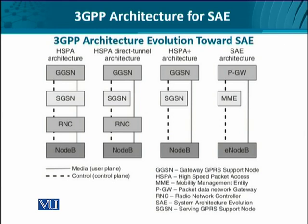Moving from HSPA to the direct tunnel architecture — the second block diagram from the left — we see the concept of direct tunneling, where the radio network controller on the core side establishes a direct connection with the Gateway GPRS Support Node instead of routing through the Serving GPRS Support Node. This meant bypassing the SGSN for the bearer path.